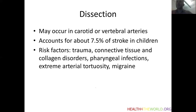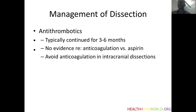Dissection may occur in either the carotid or the vertebral arteries, or sometimes in the intracranial arteries, and it accounts for about 7.5% of stroke in children. A major risk factor is trauma, but non-traumatic dissections can also occur, especially in children with connective tissue and collagen disorders, in the setting of pharyngeal infections, those with extreme arterial tortuosity, and migraine is also a risk factor associated with a higher prevalence of dissection in the cervical arteries. Typically, dissection is managed with antithrombotics for a limited period, usually three to six months. There is no real evidence to say whether anticoagulation with low molecular weight heparin or warfarin is better or worse than aspirin, and this often depends on the preference of the treating physician.